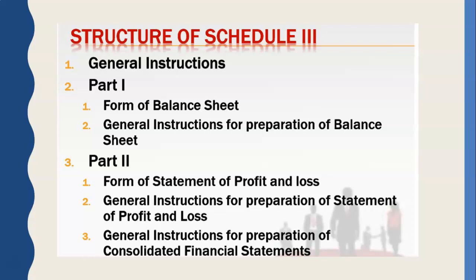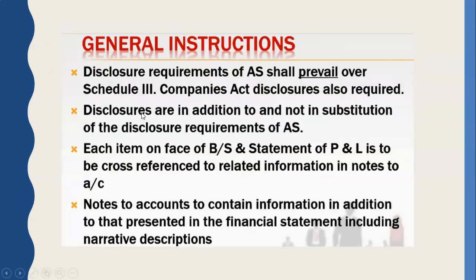Schedule 3 was introduced via Companies Act 2013. Under Schedule 3 we have general instructions on preparation of the financial statement. Part 1 pertains to how the balance sheet should be prepared, and Part 2 with respect to profit and loss account and consolidation of financial statement. Under general instructions one can get to know about disclosure requirements of accounting standards, and also the substitution of any other requirement.